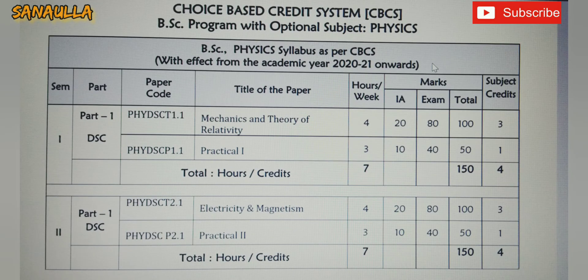Here you can see the table for the first semester. We have only Part 1, which includes one theory paper and one practical. The theory paper is Mechanics and Theory of Relativity: 4 hours per week, 20 internal marks, 80 marks for the theory examination, totaling 100 marks. For practical: 3 hours per week, 10 internal marks, 40 marks for the semester examination, totaling 50 marks. The total marks come to 150 and the subject credits are 4.